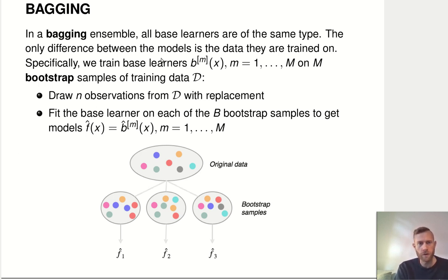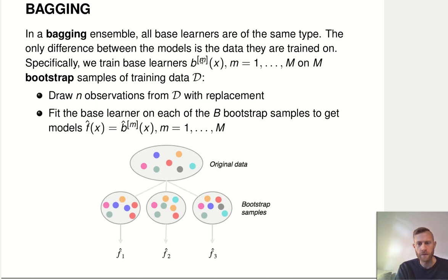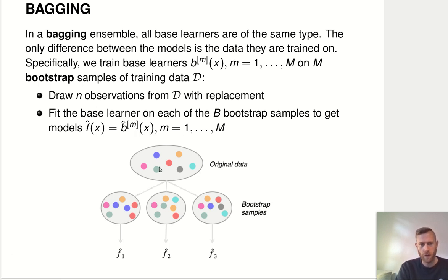We'll also call the base learners — the members of our ensemble — B superscript [m] of X, because we have M going from one to capital M of those. The idea is we draw N observations from our dataset with replacement — that's a bootstrap sample — and then we fit the same kind of model to each of these bootstrap samples to get capital M different base learner models. So we take the original data, make slightly mutated copies of it, train our model on each of these slightly different datasets, and get slightly different models.